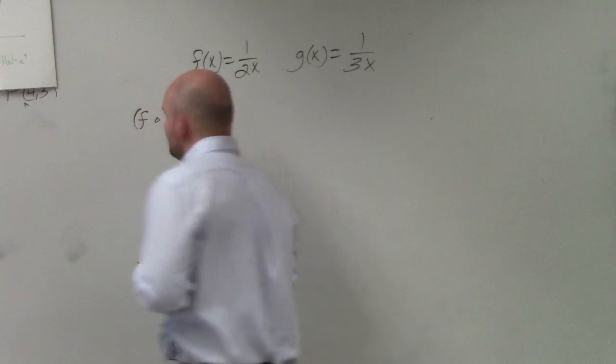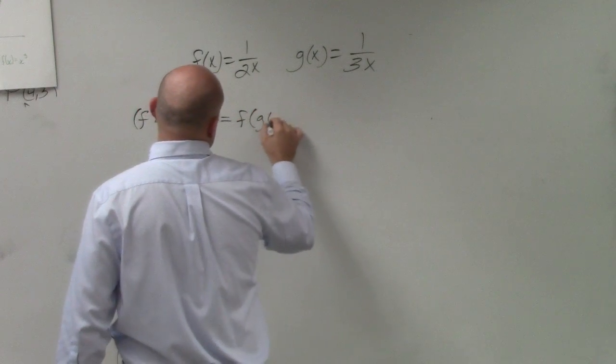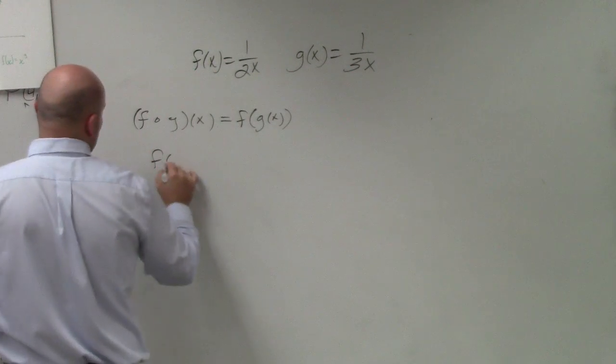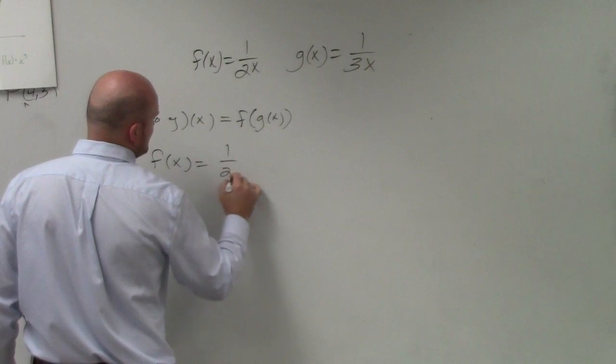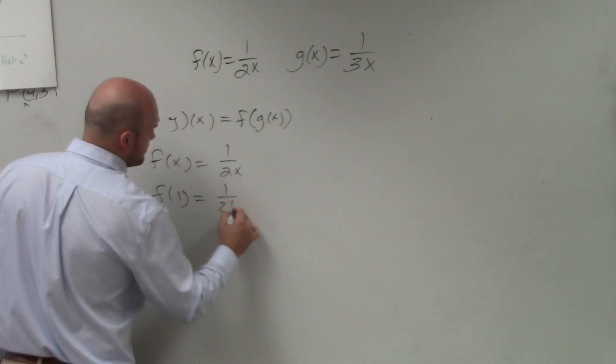So remember, f of g of x, which they actually wrote in a different way. So if you guys remember, if you had f(x) equals 1 over 2x, if I did f(1), that's 1 over 2 times 1.